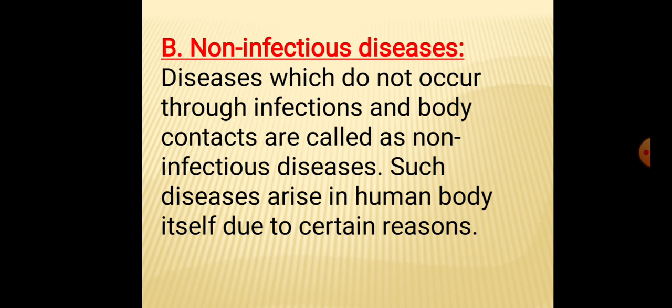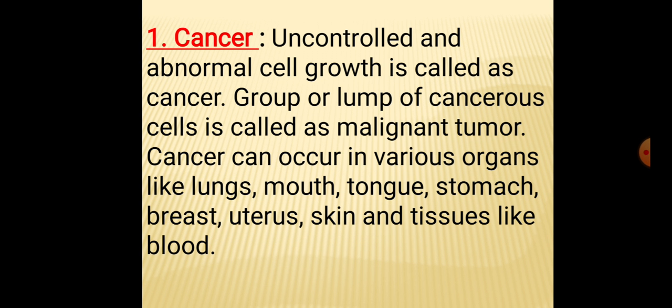Let us study cancer. Uncontrolled and abnormal cell growth is called cancer. A group or lump of cancerous cells is called a malignant tumor. Cancer can occur in various organs like lungs, mouth, tongue, stomach, breast, uterus, skin and tissues like blood. Cancer is the uncontrolled growth of abnormal cells anywhere in the body. These abnormal cells are called malignant cells or tumor cells.